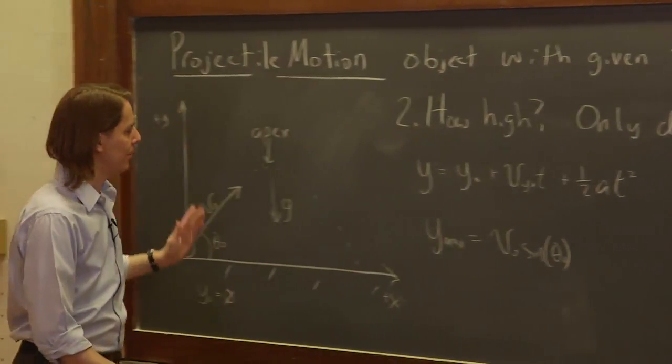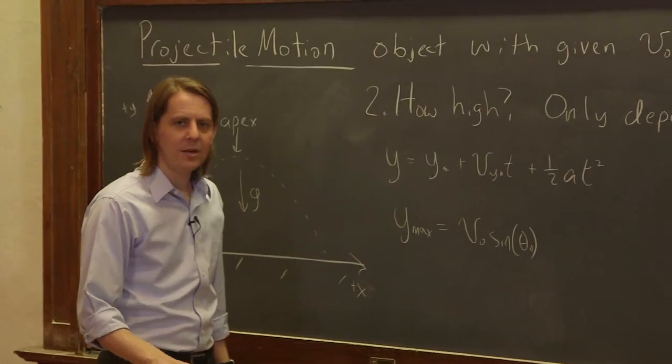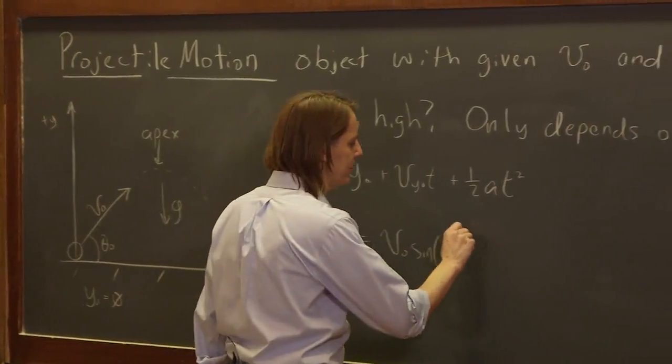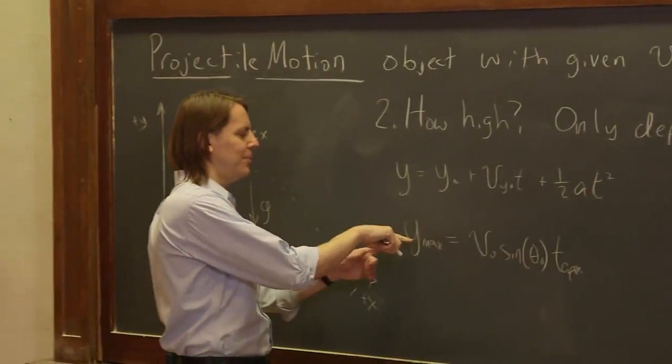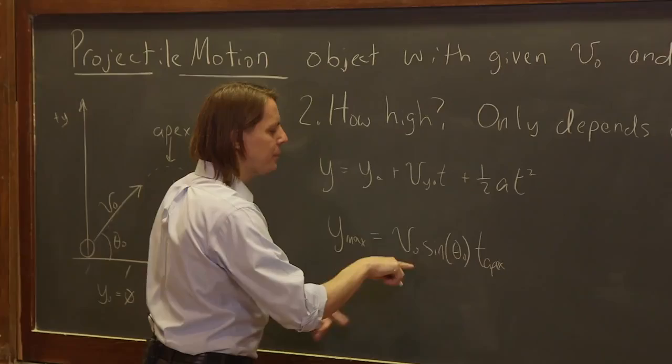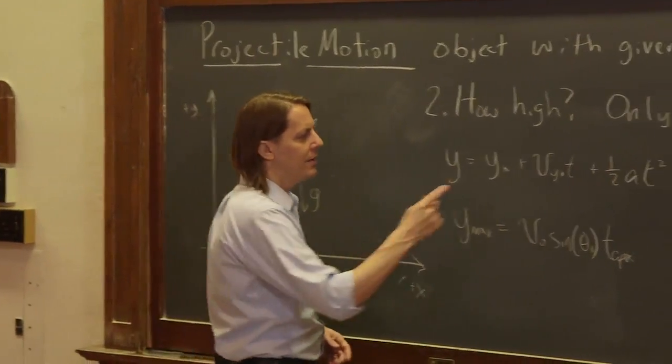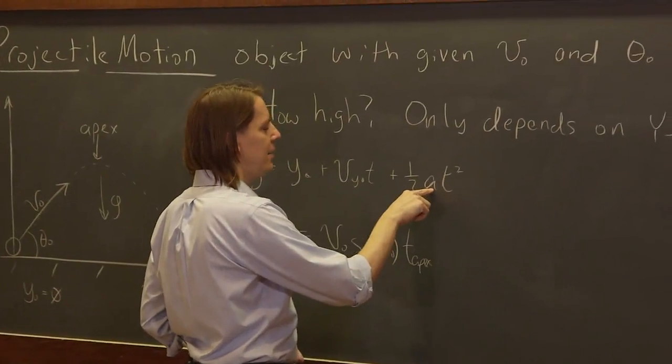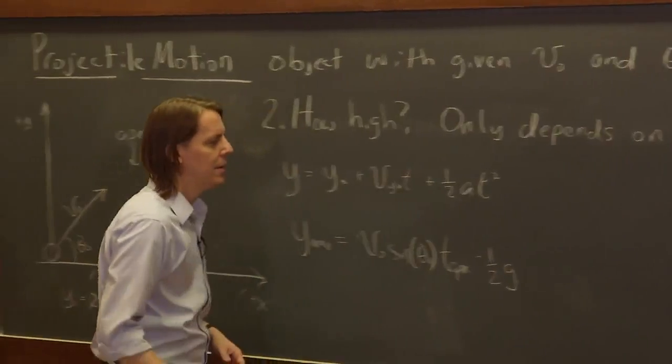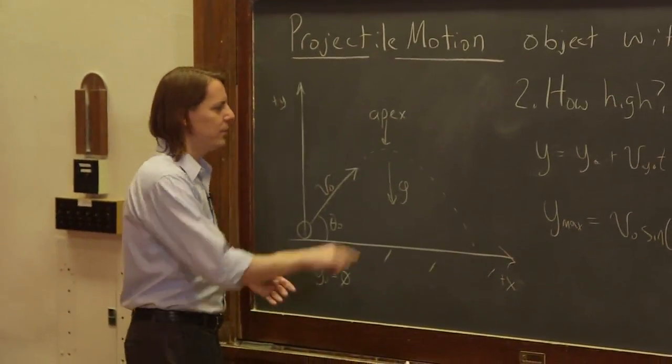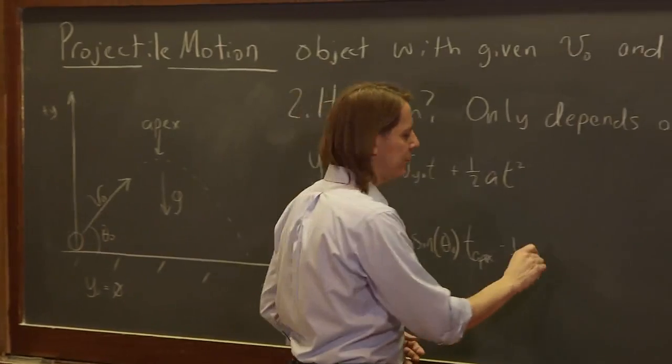Then t, we can actually say that's t apex, because we're finding a specific position for a specific time. So we have v naught sine theta naught t apex for that term. Then minus, because the acceleration is minus g, it's falling. So minus one half g, and again we're looking for a specific height at a specific time, so we say t apex squared.